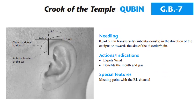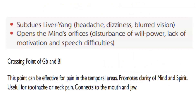Actions and indications for GB7: expels wind, benefits the mouth and jaw. Special feature: meeting point with the bladder channel. GB7 subdues liver yang for headache, dizziness, and blurred vision. It opens the mind's orifices for disturbance of willpower, lack of motivation, and speech difficulties. As the crossing point of GB and bladder, this point can be effective for pain in the temporal areas, promotes clarity of mind and spirit, useful for toothache or neck pain, and connects to the mouth and jaw.